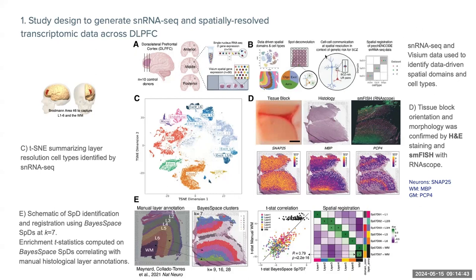From these same samples, both Visium spatial data and single-nucleus RNA-seq data were collected to match information across both technologies. In panel B, we see the design used to drive spatial domain identification and cell type assignment. Manual annotation was previously presented in a paper using a shorter cohort of donors, and deconvolution was performed to look at cell proportions, integrated with complementary analysis to examine cell-cell communications in spatial domains in the context of schizophrenia.